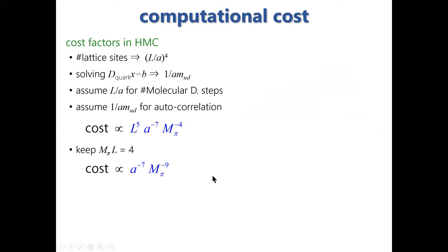Let us consider the computational cost on such fine lattices. The cost factors in the Hybrid Monte Carlo algorithm, the most popular algorithm for dynamical QCD, are as follows. Cost is proportional to the number of lattice sites. There is an additional factor of 1/(a·m_q) from solving simultaneous equations with the quark matrix. Assuming the number of molecular dynamics steps is proportional to L/a and a 1/(a·m_q) autocorrelation, the cost scales as a^{-7} when keeping m·L = 4.